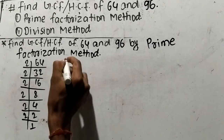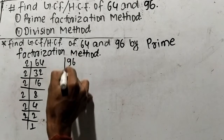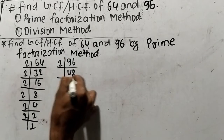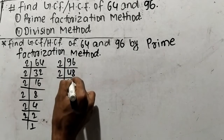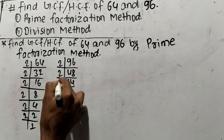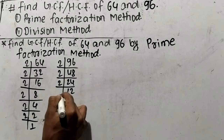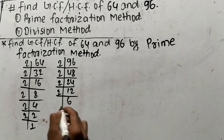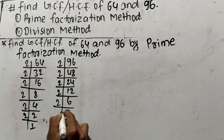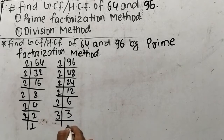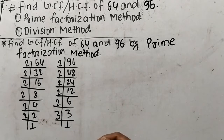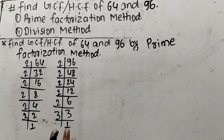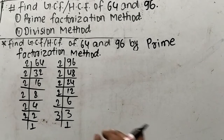In the same way, we shall find out the prime factors of 96. 96 is 2 times 48, 48 is 2 times 24, 24 is 2 times 12, 12 is 2 times 6, 6 is 2 times 3, and 3 is 3 times 1. So as you look here, we have found out the prime factors of 64 and 96.